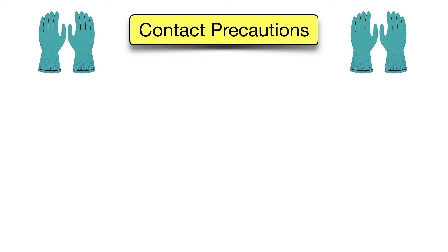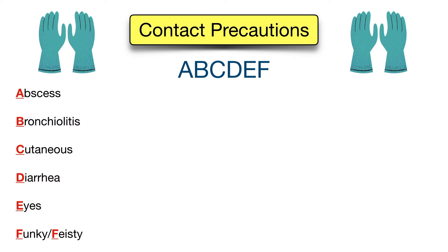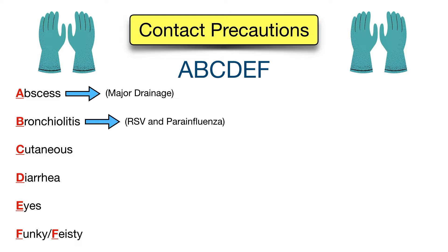Next we have contact precautions. The way to remember these is by using ABCDEF. A is for abscess — a large abscess with major drainage. Not every abscess requires contact precautions; you can use standard precautions with minor drainage, but if there is significant drainage, contact precautions are recommended. B is for bronchiolitis, because the two more common viruses that cause bronchiolitis require contact precautions: RSV or respiratory syncytial virus, and parainfluenza.